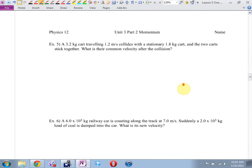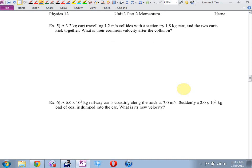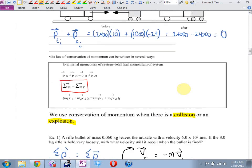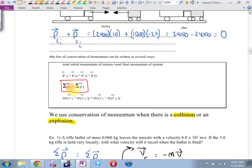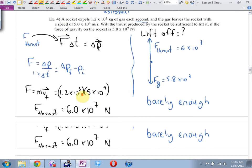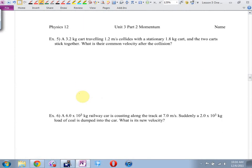Momentum is really useful in analyzing collisions. Anytime there is a collision, I go to conservation of momentum. I'm going to go to what we underlined or put a box around back here. Example 5. A 3.2 kilogram cart traveling 1.2 meters per second collides. I'm going to underline the word collides. That's my trigger. With a stationary 1.8 kilogram cart. And the two stick together. What's their common velocity after the collision?